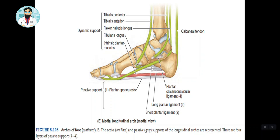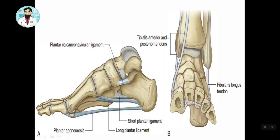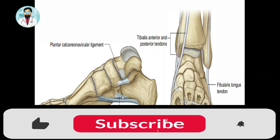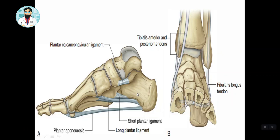They are held together with these bones, and you can see the tibialis anterior and posterior tendons working on the suspension structure of the arch. In this diagram, you have the plantar aponeurosis here, and the short and long plantar ligaments — these are very strong ligaments connecting the arch. You can see the Calcaneum, Talus, Navicular, Cuneiform and all the bones are connected.